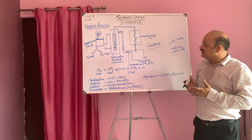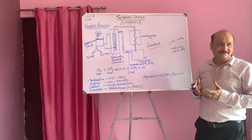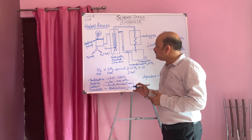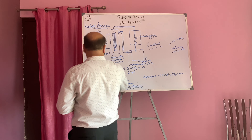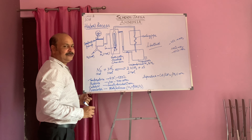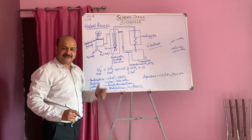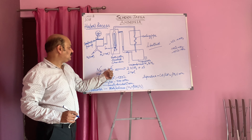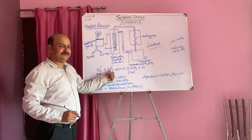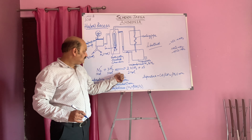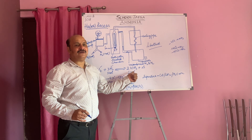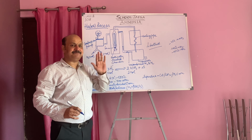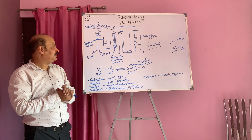So what are the things used to prepare this? Nitrogen and hydrogen gas. With the help of this equation, one volume of nitrogen and three volumes of hydrogen are mixed, and two volumes of ammonia are produced along with heat. So it's an exothermic reaction.